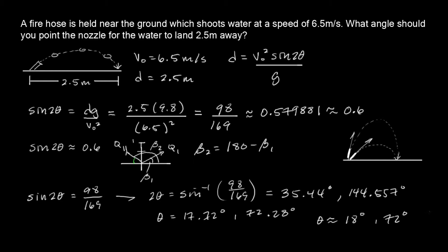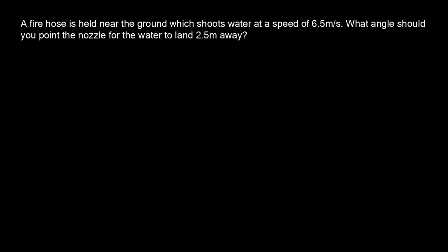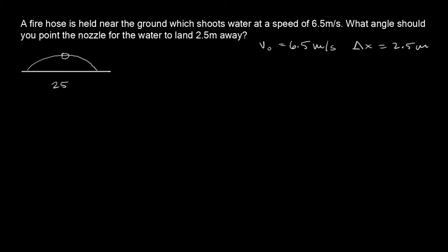That was the simple way of doing the problem using the range formula. Now we're going to look at a more rigorous approach where we don't know that formula. Same givens: V₀ = 6.5 m/s and delta x = 2.5 meters. The particle follows this parabolic shape, reaching a high point, with 2.5 meters across.